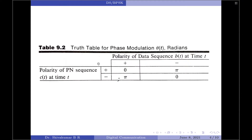If the polarity of both c(t) and b(t) are positive, the phase of the transmitted signal is 0. Similarly, if the polarity of c(t) and b(t) are both negative, the phase of the transmitted signal is once again 0. Lastly, if either c(t) or b(t) is positive and the other one is negative, then the phase of the transmitted signal is phase advanced by 180 degrees or by pi radians.